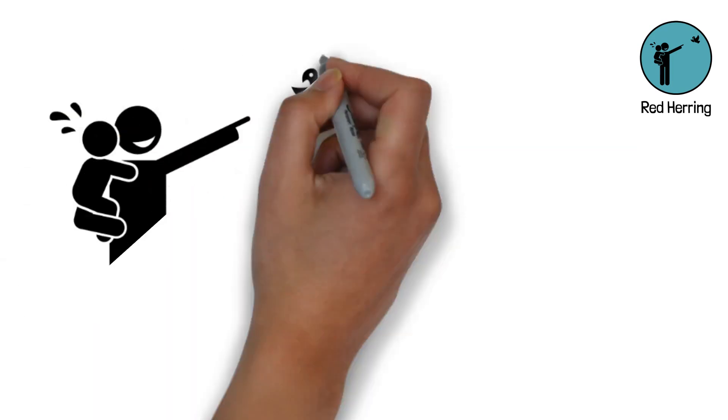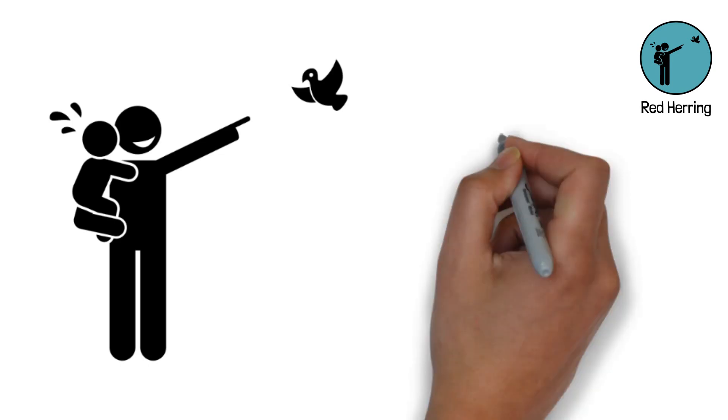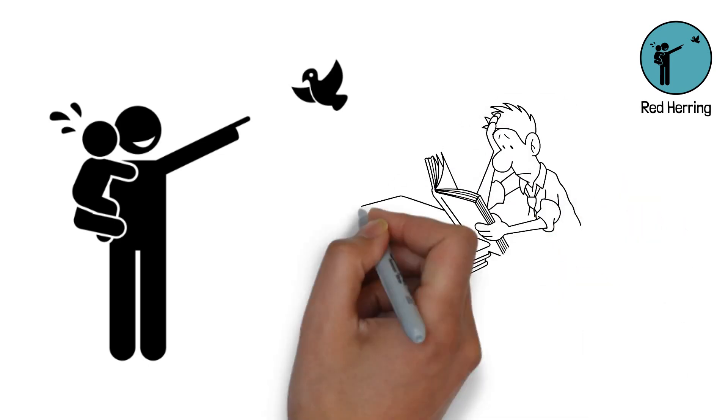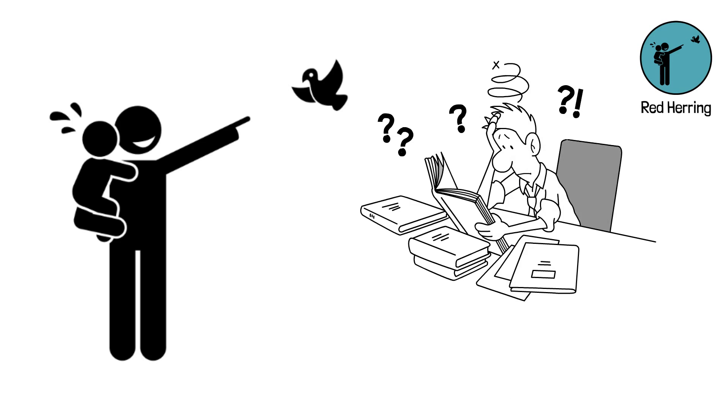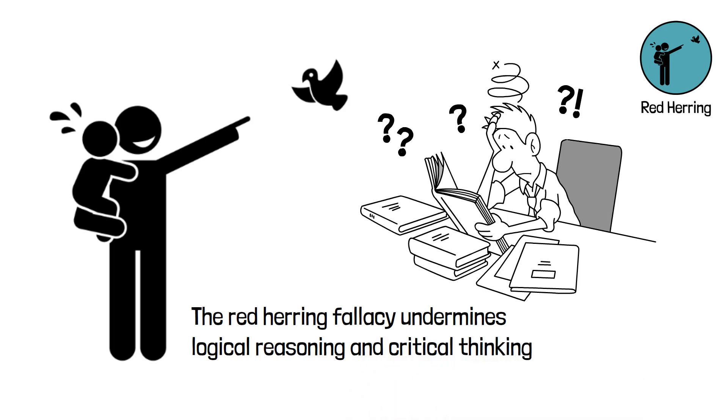9. Red Herring. The Red Herring fallacy involves introducing an unrelated topic or issue to divert attention from the original argument. It is a tactic to distract and confuse the audience, making it difficult to stay focused on the main point. By shifting the discussion away from the original argument, the Red Herring fallacy undermines logical reasoning and critical thinking.